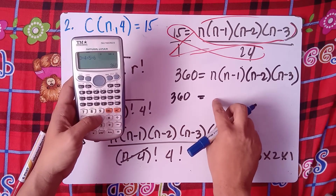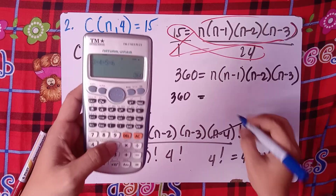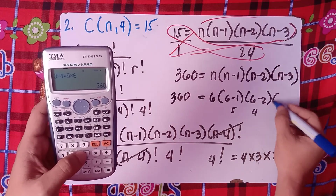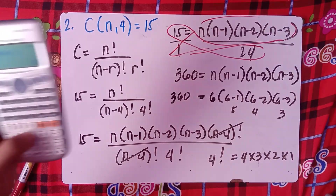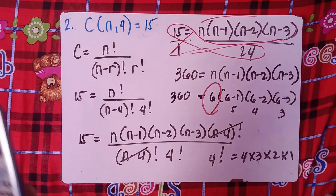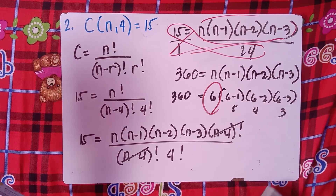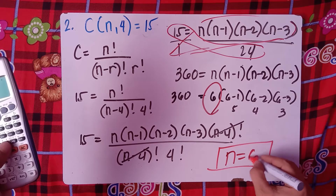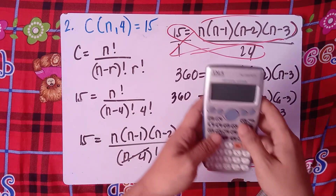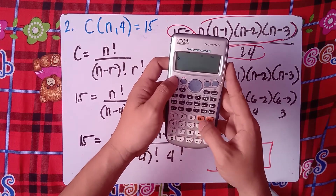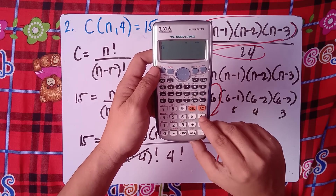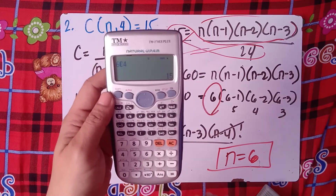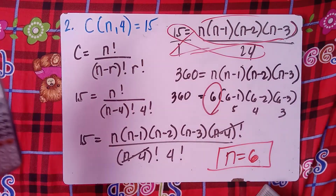So our n must be the largest number, which is 6. Because 6 − 1 = 5, 6 − 2 = 4, and 6 − 3 = 3. Therefore n = 6. We can verify using the calculator shortcut: press 6, then Shift ÷ (nCr), then 4. You get 15, which matches our given C. So n = 6 is confirmed.